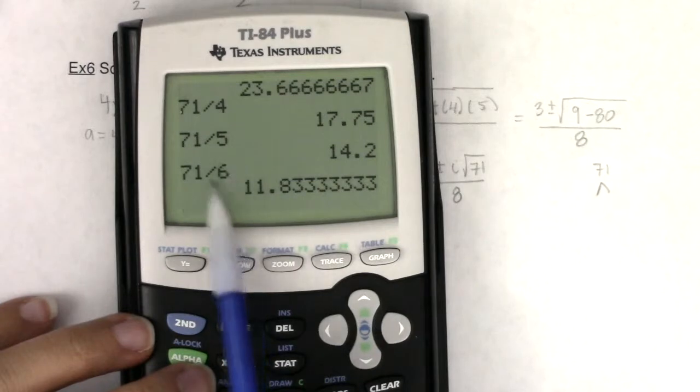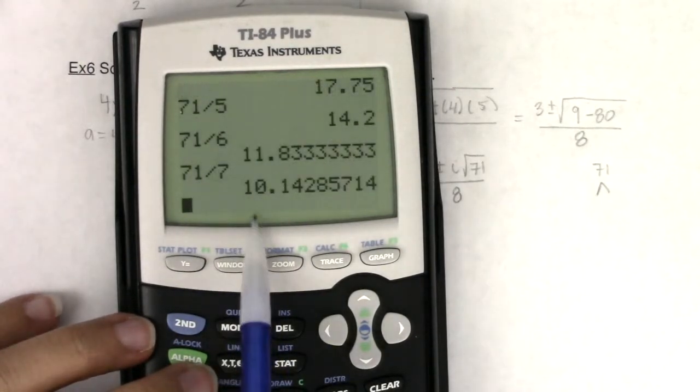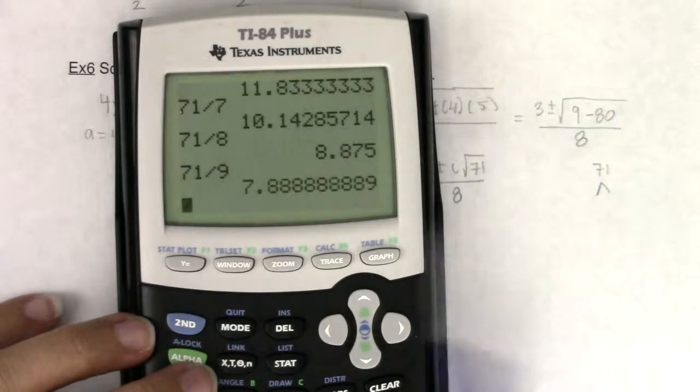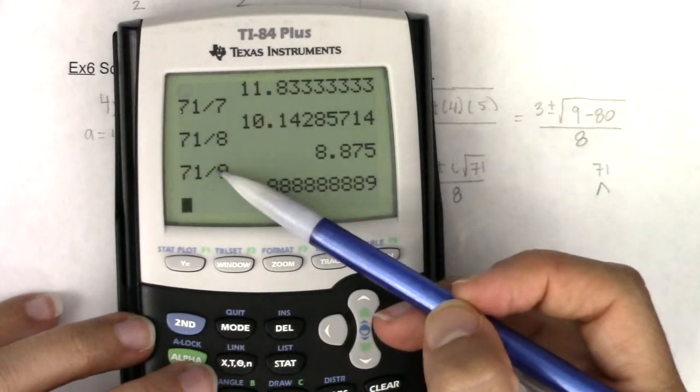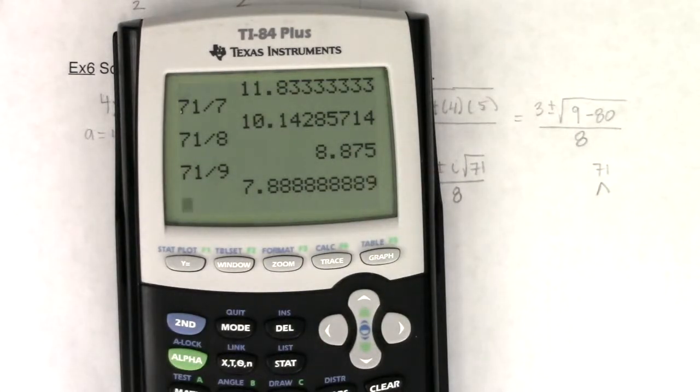Alright, not dividing evenly. 6 squared is 36, not larger than 71. 49 doesn't work. And then we'll try 71 divided by 8, doesn't work. 71 divided by 9, doesn't work. But 9 squared is larger than 71. So I can stop. I'm done at this point. 71 is a prime number.